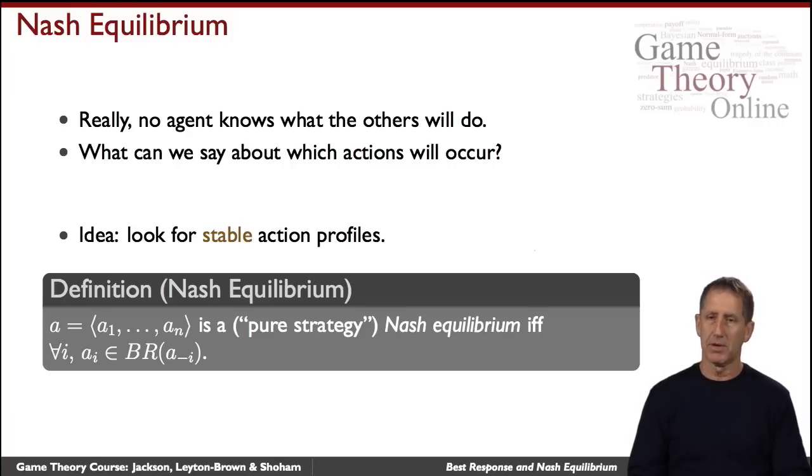And the Nash equilibrium, briefly, is a set of actions, one for each of the agents, such that each is the best response to the others.